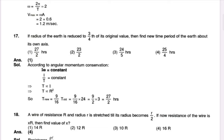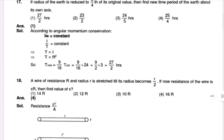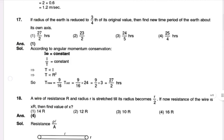If the radius of Earth is reduced to 3/4 of its original value, find the new time period of Earth about its own axis. Using I omega equal to constant and I by T equal to constant, the new time period T2 of T1 is equal to 9 by 16.